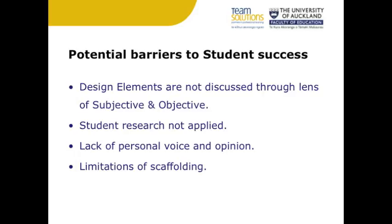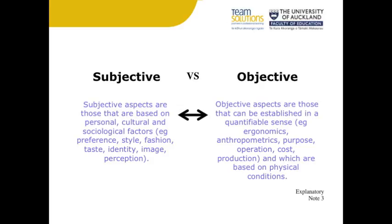Students can struggle to clearly articulate the differences between subjective and objective views. The definition of subjective is based on personal opinions, interpretations and points of view, emotions and judgement. Objective information or analysis is fact based, measurable and observable. There is room for both views in design, and for the purposes of this standard it is in the student's best interest to be able to discuss and compare aspects of them both.